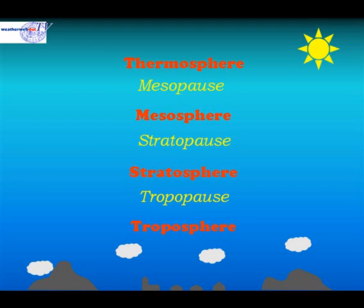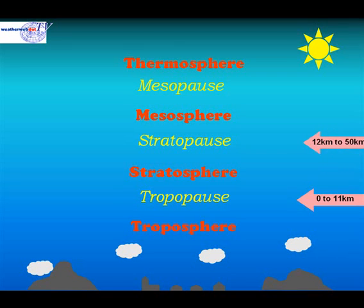The heights of each of these layers varies on a day-to-day basis dependent on temperature. The troposphere extends up to about 11km. The stratosphere extends between 12km and about 50km, with the mesosphere between about 50km and 90km. The thermosphere is above 90km.